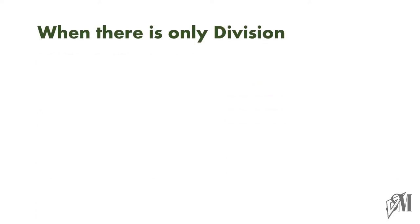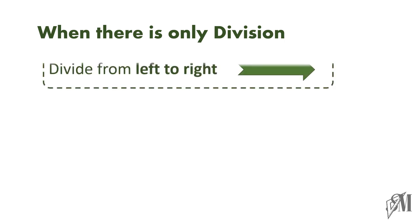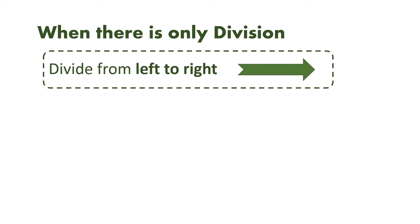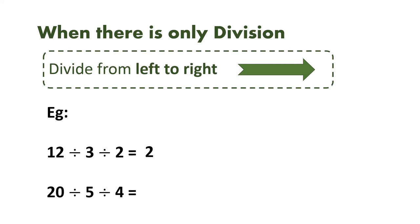Now let us move into the next part — when there is only division. Just like when there is only subtraction, when there is only division too, we follow the order from left to right. For example, 12 divided by 3 is 4, 4 divided by 2 is 2. Similarly, 20 divided by 5 is 4, 4 divided by 4 is 1. So here, always we start from left and go in the direction of right.